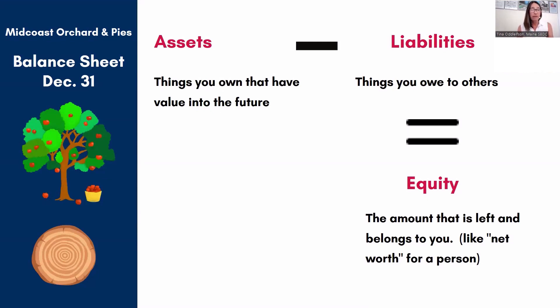If I sold off all my assets and used the money to pay off all my liabilities, whatever I have left is called equity. That's the part that a lot of people get confused about because the word equity isn't one we use all the time.